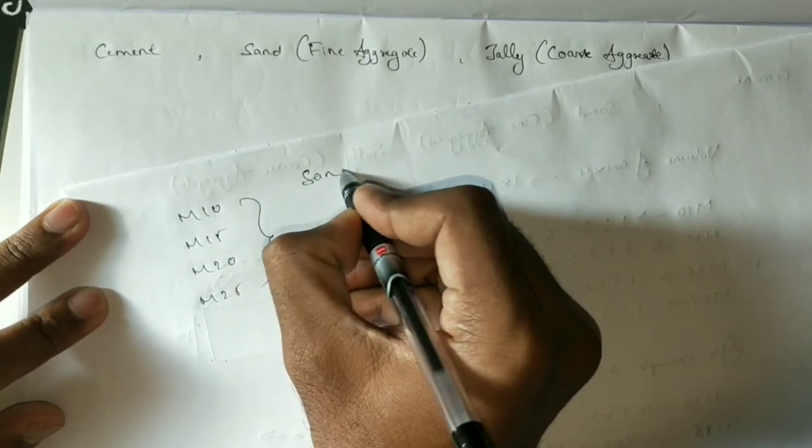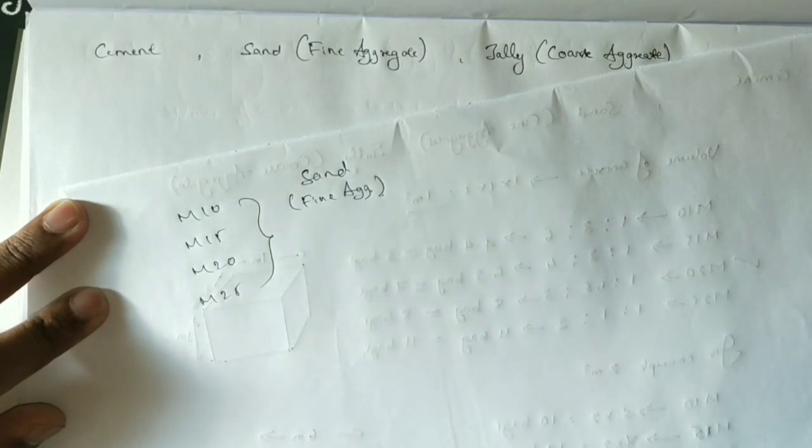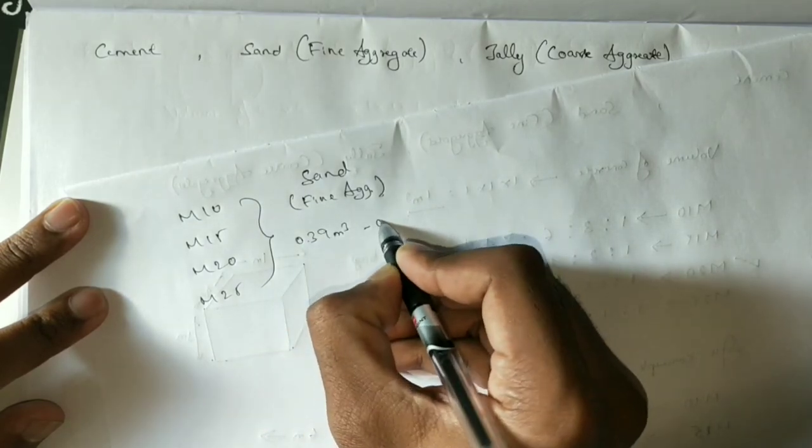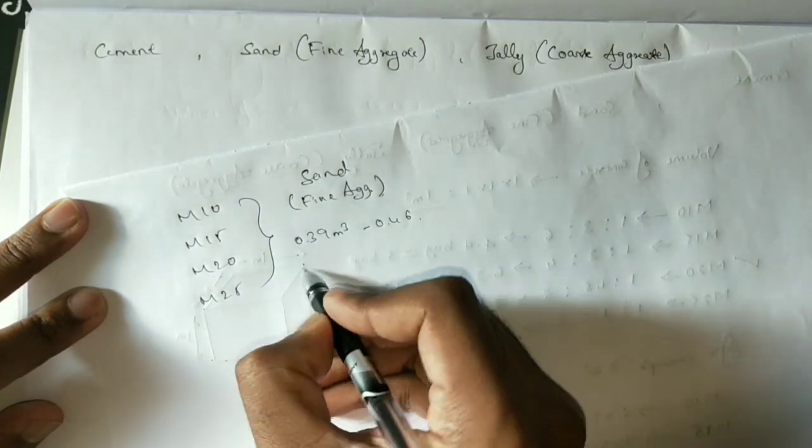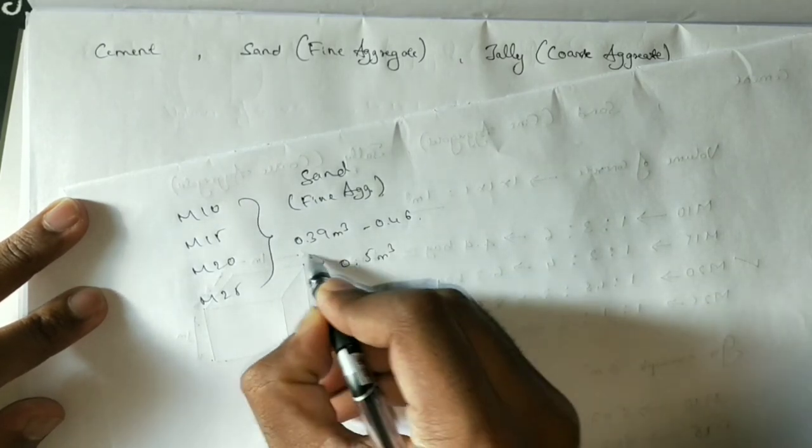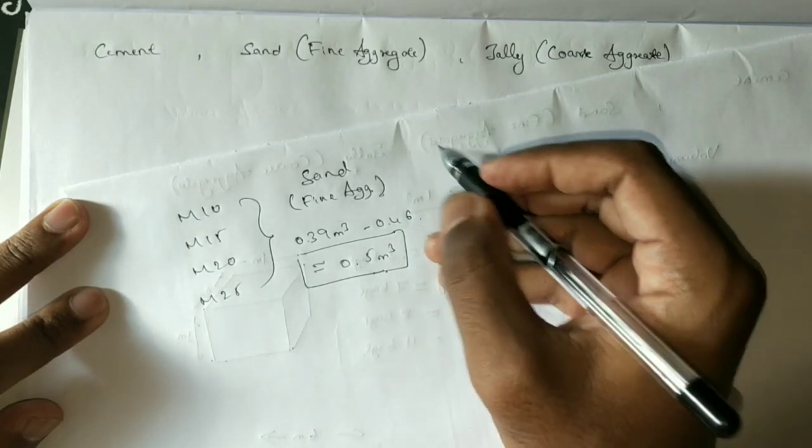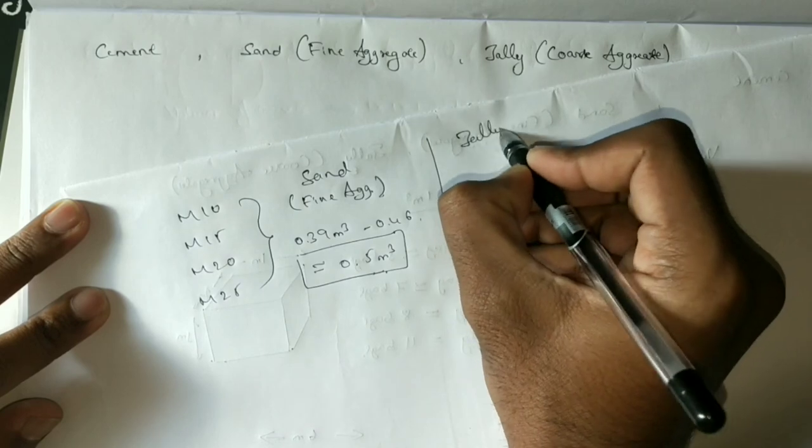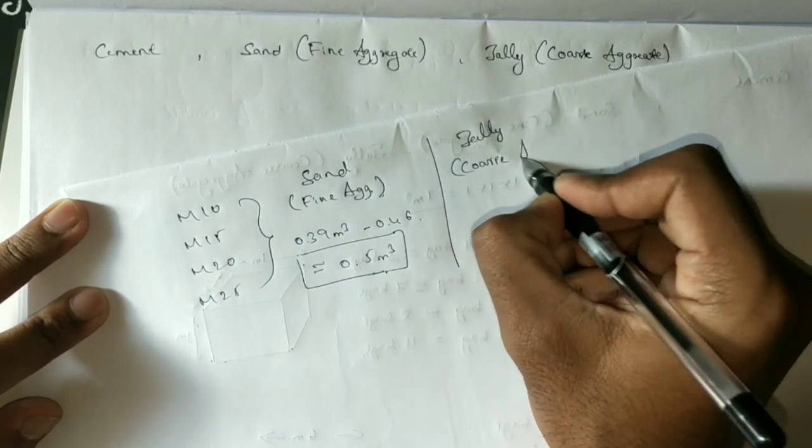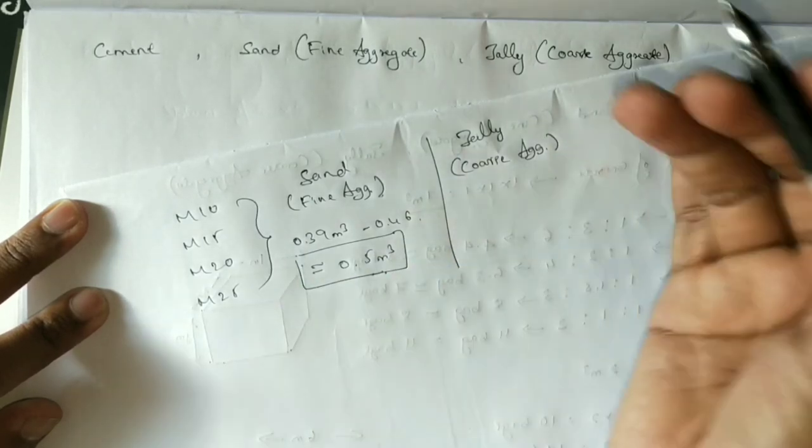For sand (fine aggregates), the quantities are: M10 requires 0.3 cubic meters, M15 requires 0.46 cubic meters, and M20 requires 0.5 cubic meters of M-sand.